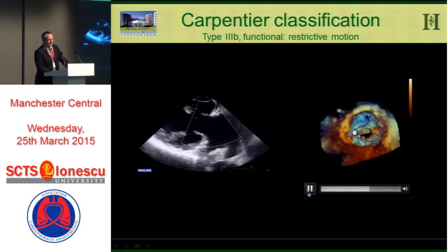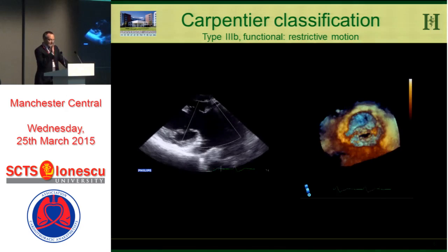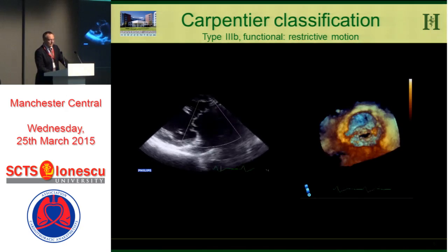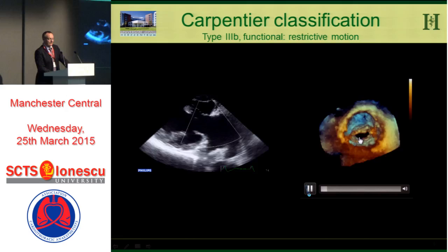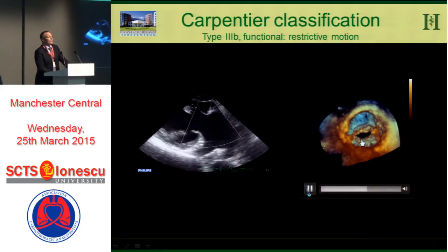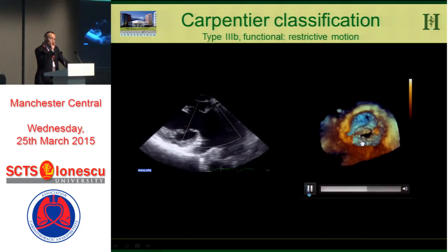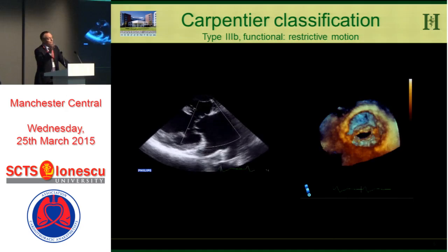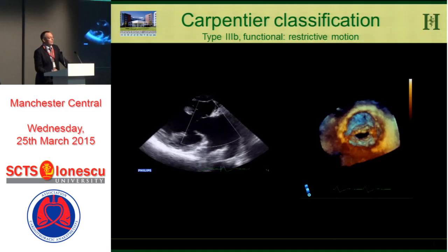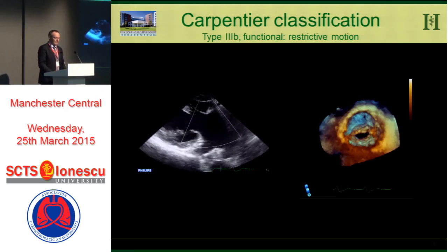In the transgastric view, you can see that the posterior mitral leaflet is really tethered into the left ventricle due to the dilated left ventricle. In the 3D view, looking from the left ventricle upward from the apex toward the mitral valve — which is the vice versa perspective from the left atrial view — this is the P3 region, where the most pronounced restriction occurs in type 3B, because it is mostly the posterior part of the ventricle that tethers the posterior leaflet.